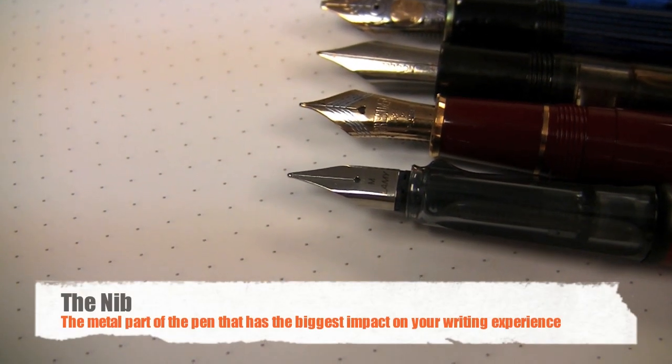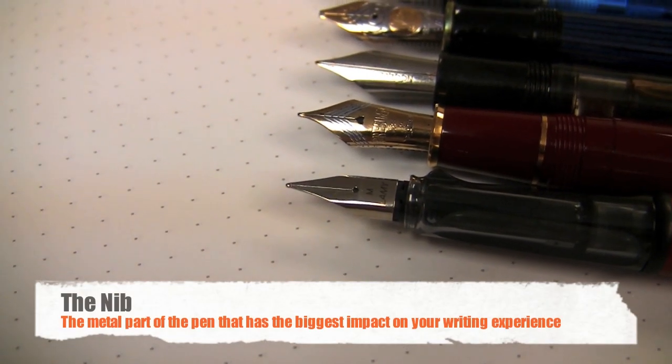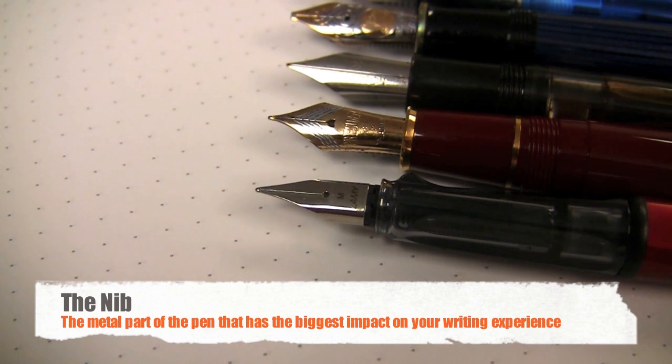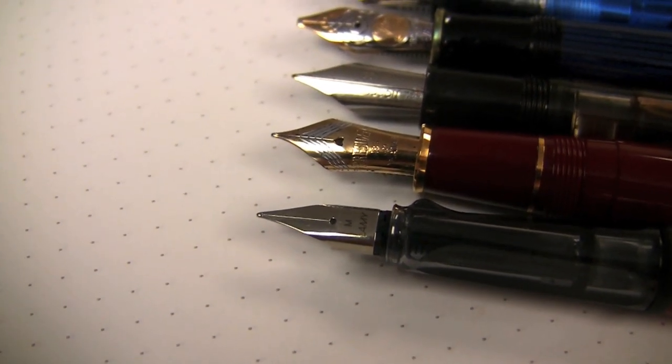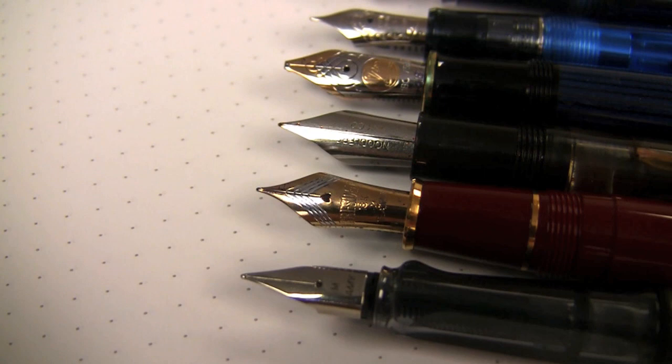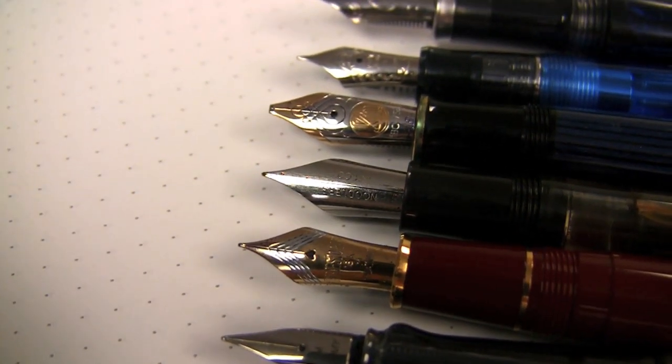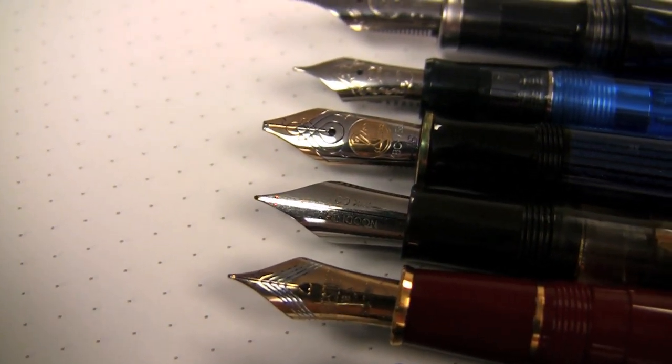The fountain pen nib is really the most important part of the pen. It's going to make the biggest difference in terms of how the pen is going to write. As you can see there's a lot of different styles. It's one of the most decorative parts of the pen. It's usually where you're going to find the company's logo.